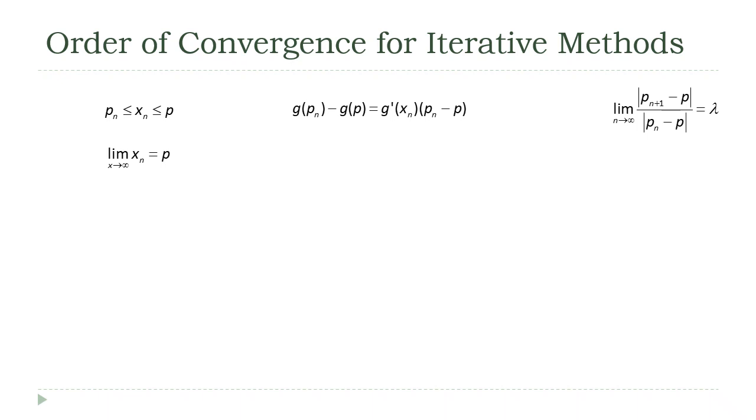All right, next, think about what that says about the derivative. If we look at the sequence that we get from taking the derivative of those x values, since the sequence of x values converges to p, and g prime is continuous at p, that means that the limit of g prime of x sub n, as n goes to infinity, is just g prime of p.